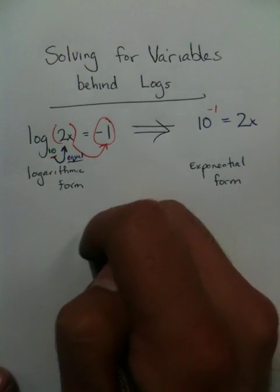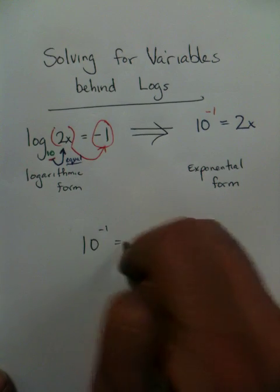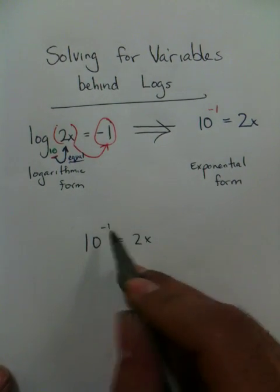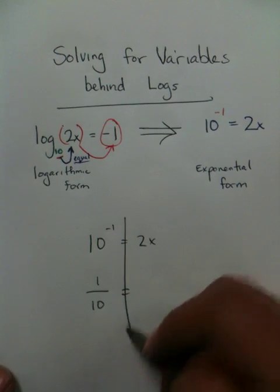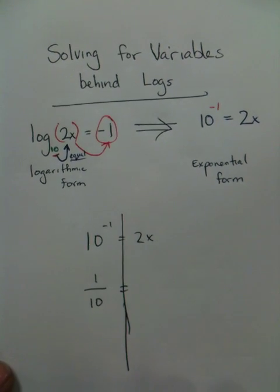Now your problem looks like this. It says, 10 to the negative 1 power equals 2x. Well, 10 to the negative 1 power happens to equal 1 over 10. That's basic exponential rules.